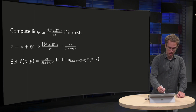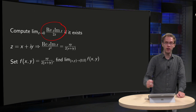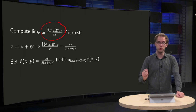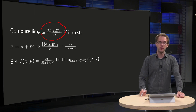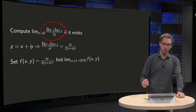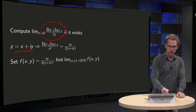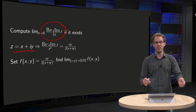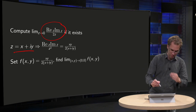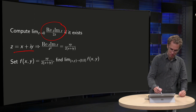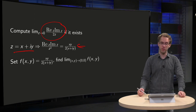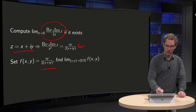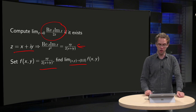Now we compute the limit: real part of z times imaginary part of z, divided by 2z, and we take z to zero. As usual we set z equals x plus iy, so the real part of z is x and the imaginary part of z is y, and substitute it into f of x and y. We will then send x and y to zero zero.